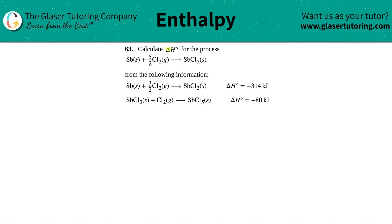Number 63. Calculate the delta H for the process, and then they give us the formula that they want. We need to calculate the delta H for Sb solid plus 5 over 2 Cl2 gases, and when they combine it will make SbCl5 solid.